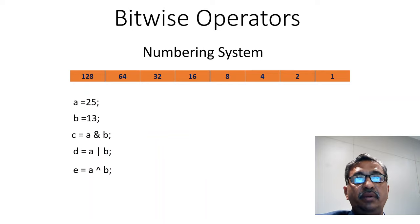Now take one more example. If we consider A as 25, B as 13, we want to calculate C, D and E. So 25 is equivalent to 16 plus 8 plus 1. 13 is equivalent to 8 plus 4 plus 1.